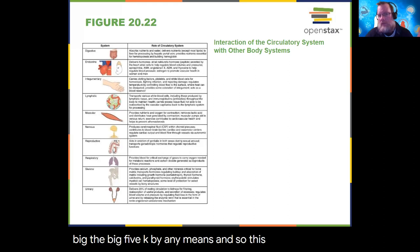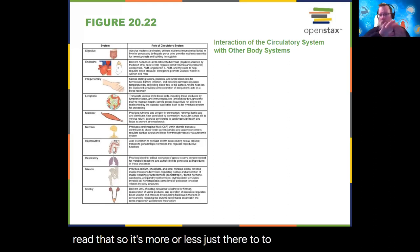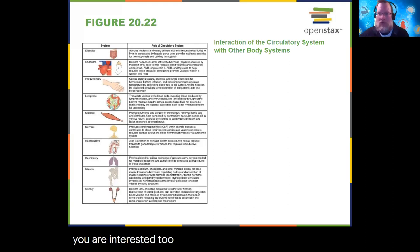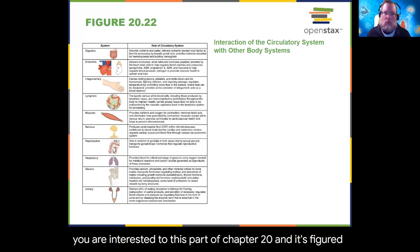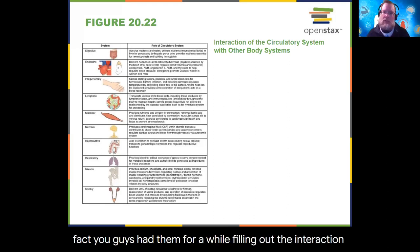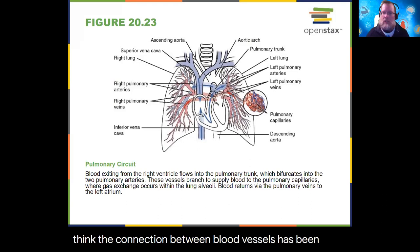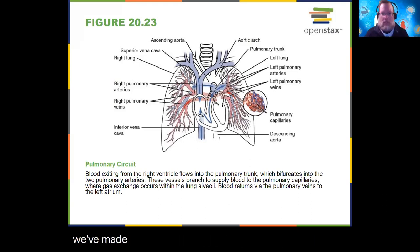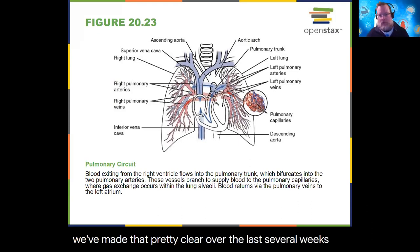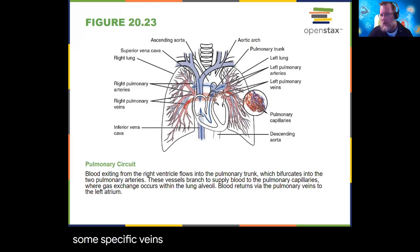This figure in your OpenStax, figure 20.22, is more or less just there to direct you if you're interested in this part of chapter 20. The connection between blood vessels and the cardiovascular system as a whole has been made clear over the last several weeks. We're almost done with this chapter — the rest of the information is primarily just the specific names of some specific veins and arteries.